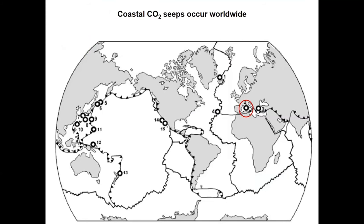This is a tectonic map I often show of where CO2 seep systems exist. They basically occur wherever tectonic plates are either moving under each other or spreading apart. In the Mediterranean, Africa is moving into Europe tectonically, creating huge volcanoes and boiling the chalk in the seabed, which comes bubbling up through the sea floor. You can see a similar process occurring around Japan, where CO2 comes up through the sea floor. Members of the public sometimes think this is the cause of ocean acidification, but it's very minute compared to the CO2 taken up from fossil fuel burning — 30% of which is entering the ocean.